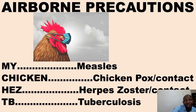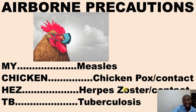For airborne precautions, this is the simplest way to get it. You say 'My Chicken Has TB' — yes, and these are the diseases that each letter represents. The diseases are: Measles, Chicken pox, Herpes zoster (varicella), and Tuberculosis. These diseases indeed require airborne precautions.